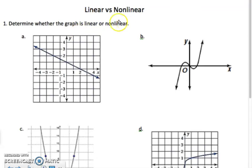Here's a quick video on whether to tell something is linear versus nonlinear. Linear means a line, and nonlinear means anything except a line.